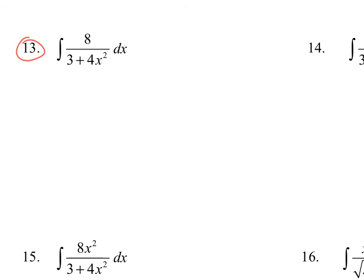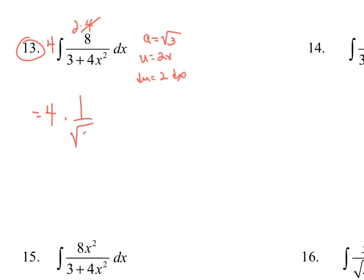Number 13: this also looks like the arc tangent antiderivative. Here a equals √3 and u equals 2x, so du equals 2 dx. I already have a 4 in the numerator, and I need a 2 for the du, so the 4 stays out in front as a coefficient. The result is 4 times 1/a times arc tan of u over a, plus C — that's 4 times 1/√3 times arc tan of 2x over √3, plus C.